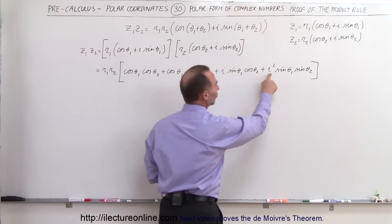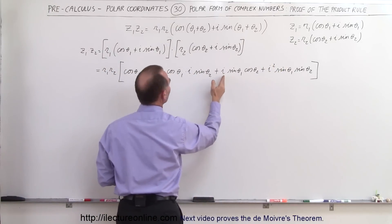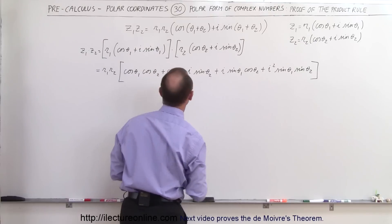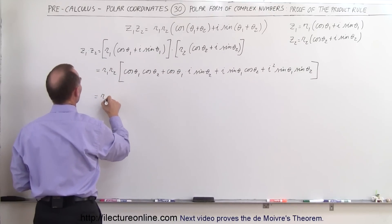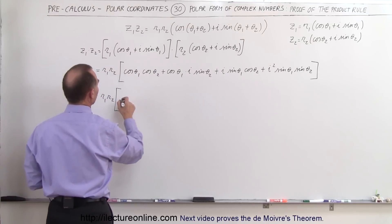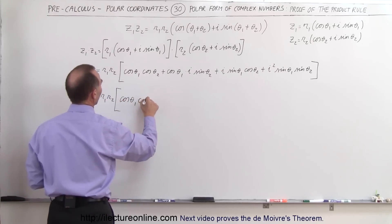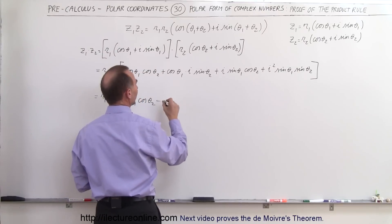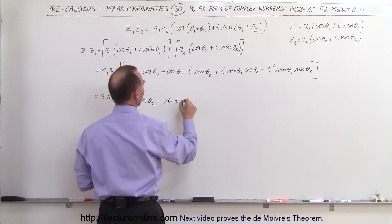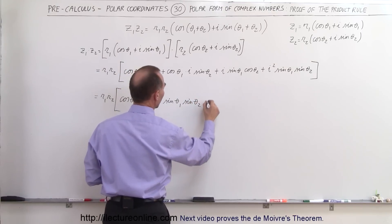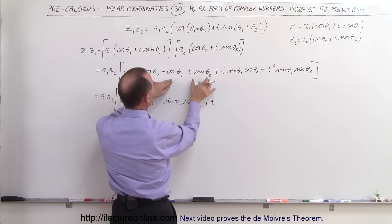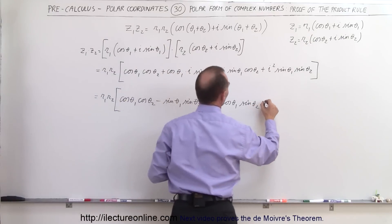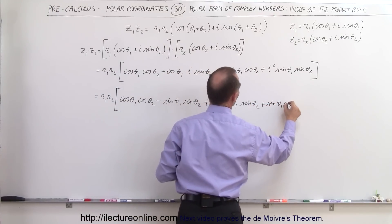Now, i² equals negative 1, so I can replace i² with −1. Factoring out an i from the imaginary terms, we end up with r1·r2 times [(cos θ1·cos θ2 − sin θ1·sin θ2) + i·(cos θ1·sin θ2 + sin θ1·cos θ2)].